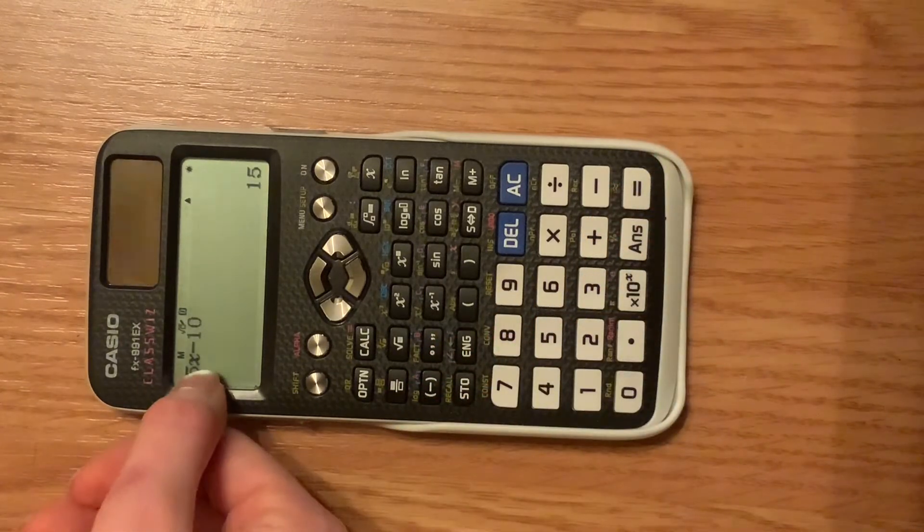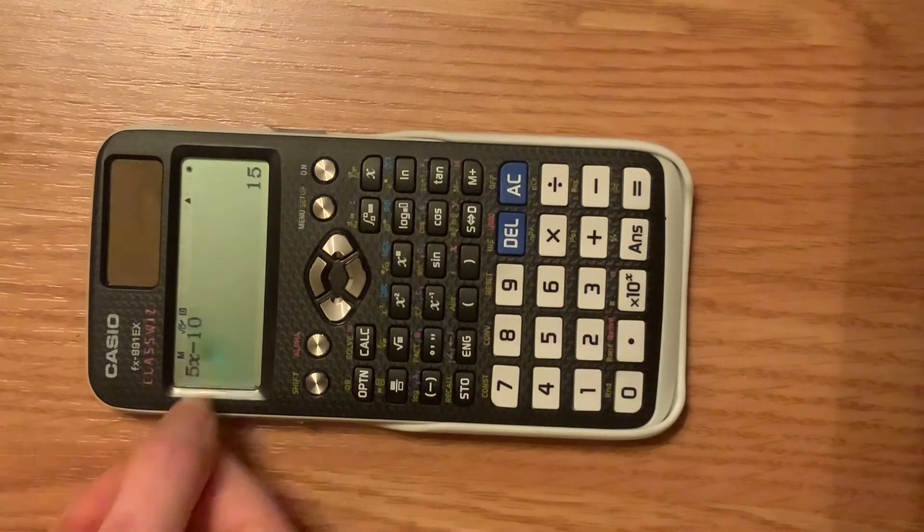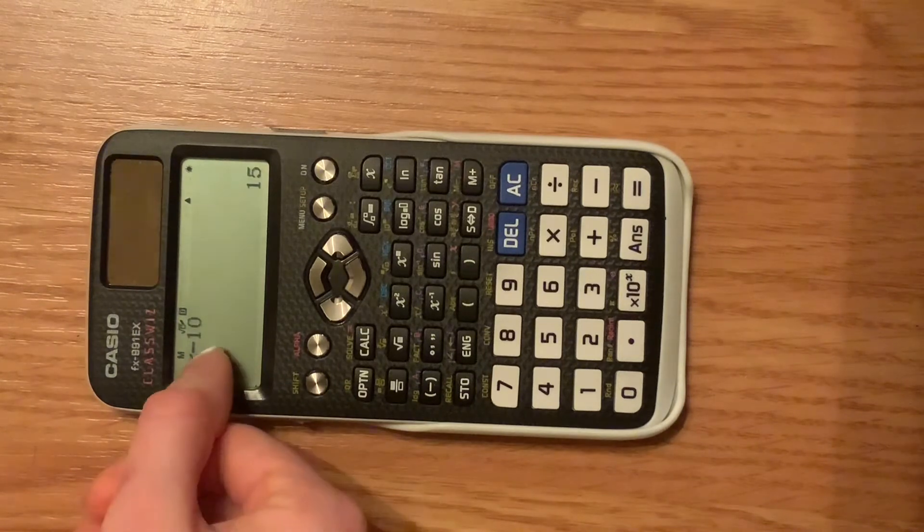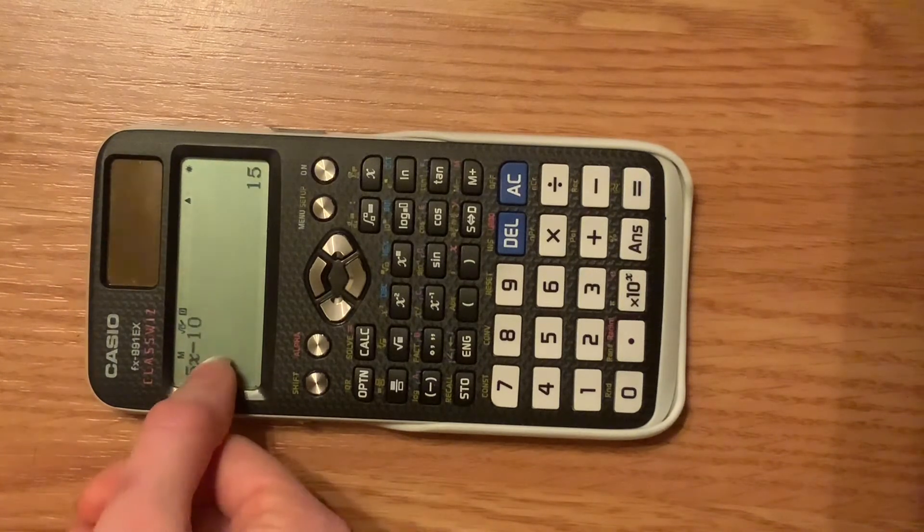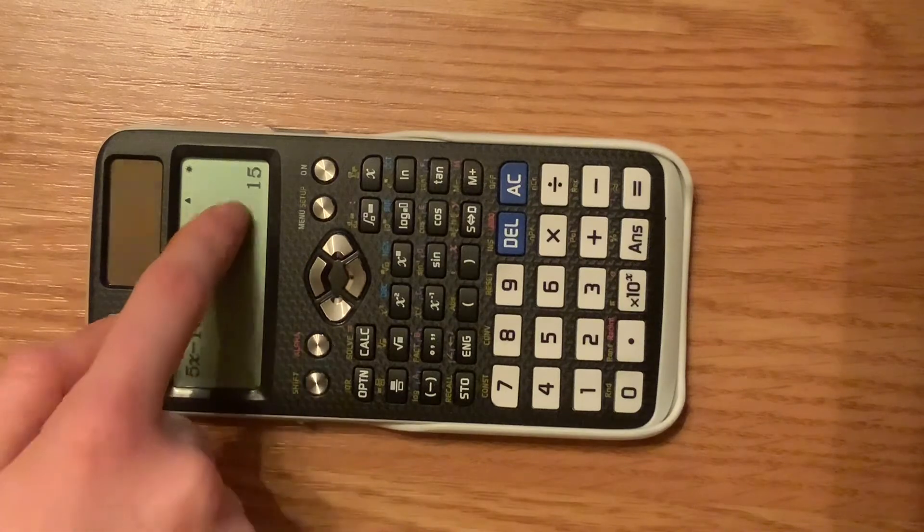And because it stored the value of 5 for x, you'll see 5 times 5, in this case, is 25 minus 10, is 15.